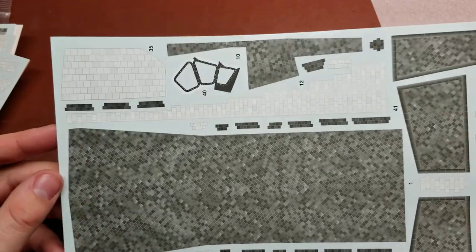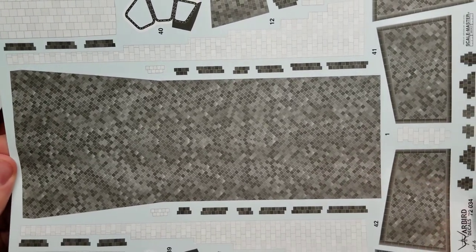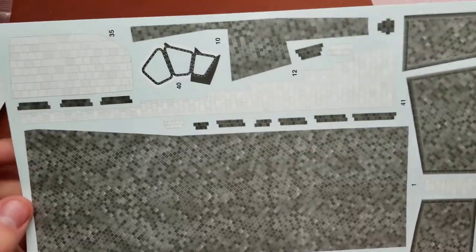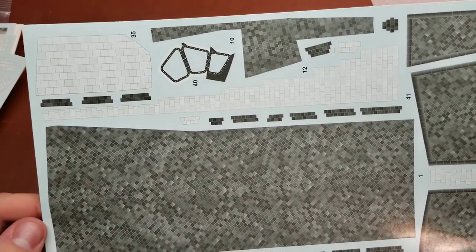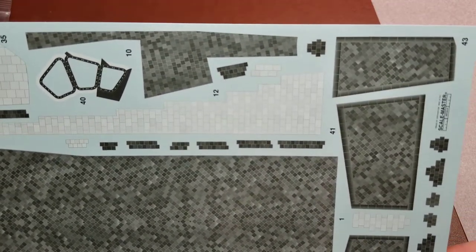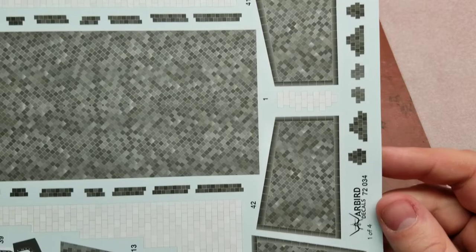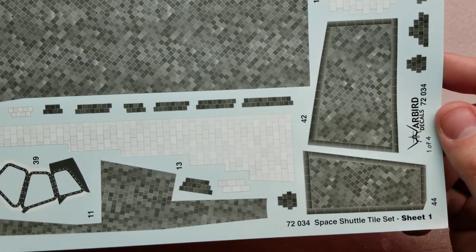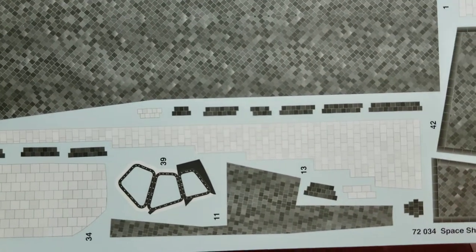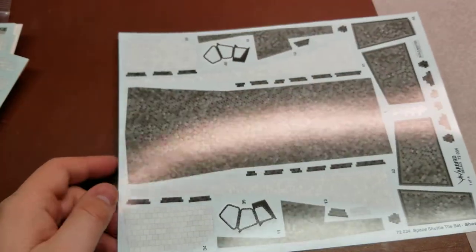Here is a picture of the first decal sheet. You have all of the various tones of those foam tiles. It is also nice that we have the border surrounds for around the windows. You can see extremely long decals.